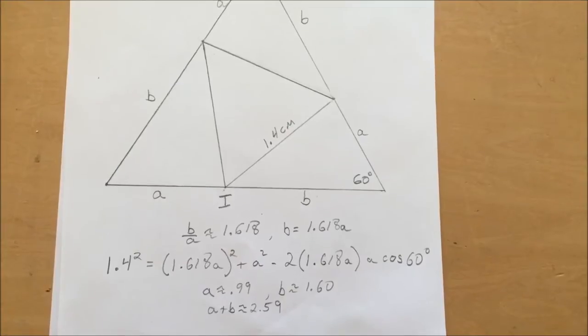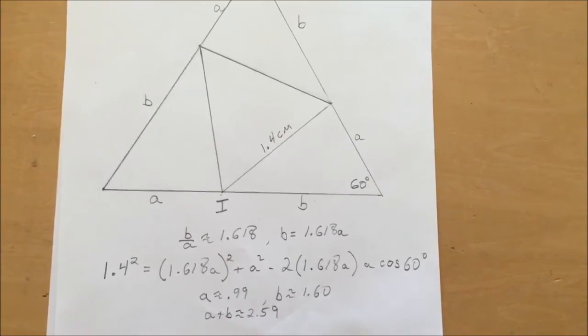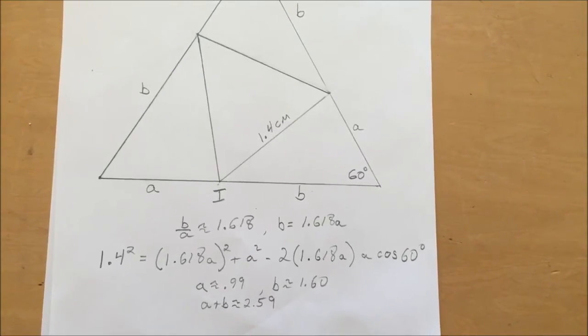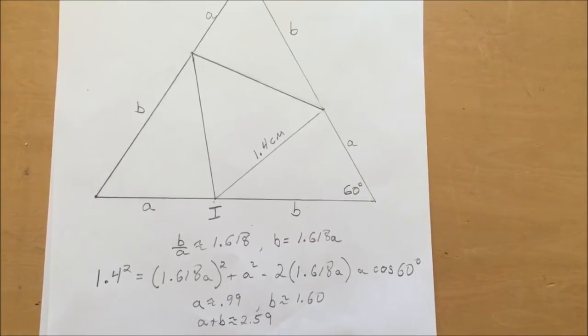We can round that up to 2.6 centimeters. We can double that, add 2 millimeters, and we'll get the 5.6 centimeters that are used in the original construction of the tetrahedron.